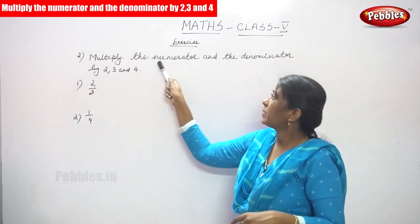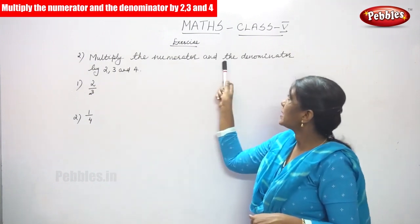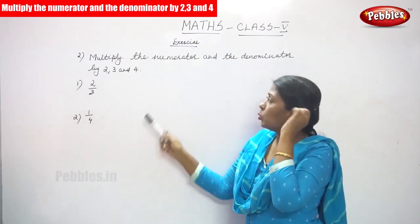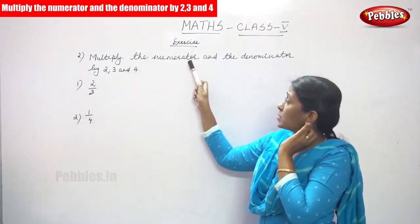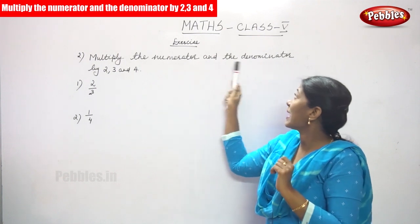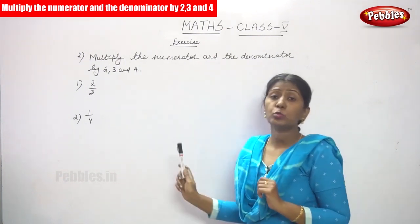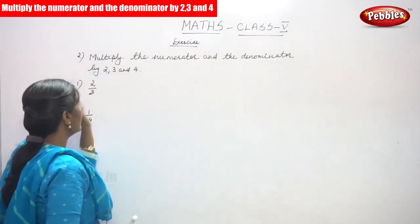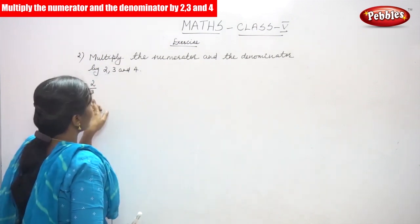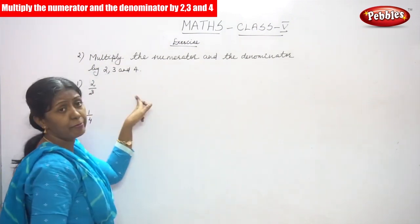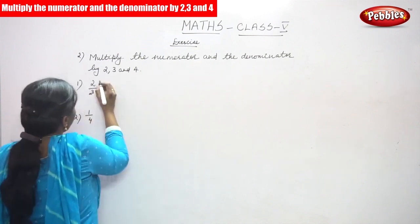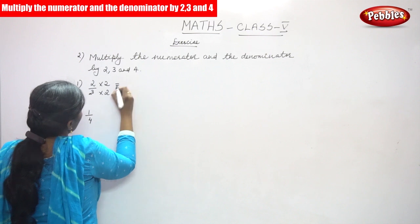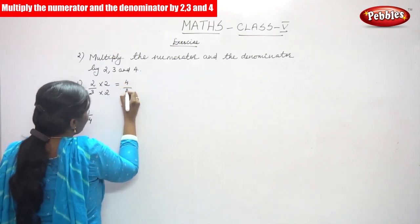The suggestion is to multiply the numerator and the denominator by 2, 3, and 4. So this fraction is given, and this fraction is multiplied by 2, 3, and 4. First you have to multiply with 2. So 2 into 2 gives 4, and the answer is 4 by 6.